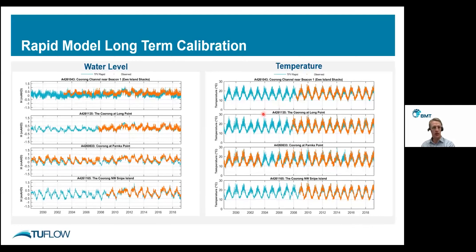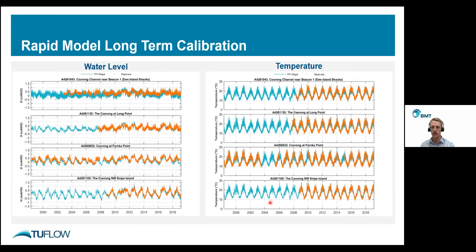The 100-year-in-one-day capability was made possible in large part by the dynamic morphology developed earlier. Calibration results show water level at various locations through the lagoon — from the Murray River mouth down into the South Lagoon — with observations in orange and model predictions in blue. On the right, temperature is similarly compared moving south through the lagoon. In both cases, we're getting really good prediction of water levels and temperature, indicating the hydrodynamics and thermodynamics are both well resolved in this model.